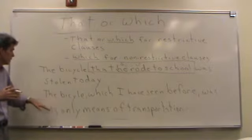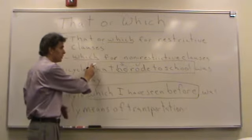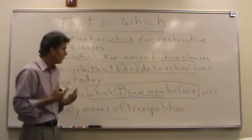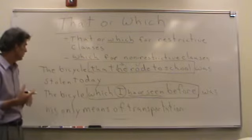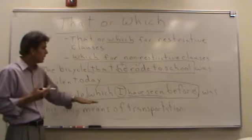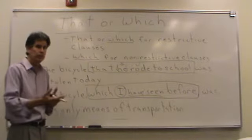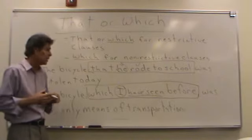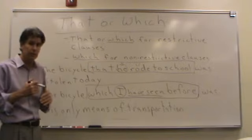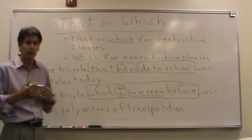'The bicycle, which I have seen before, was his only means of transportation.' 'Which I have seen before' is a relative clause — 'I have seen' is a subject and verb. The sentence can stand without it: 'The bicycle was his only means of transportation.' Is that relative clause essential to the meaning of the sentence? Probably not. It's really a non-restrictive clause — just some extra information that doesn't restrict or identify the bicycle. So it needs commas on both sides.